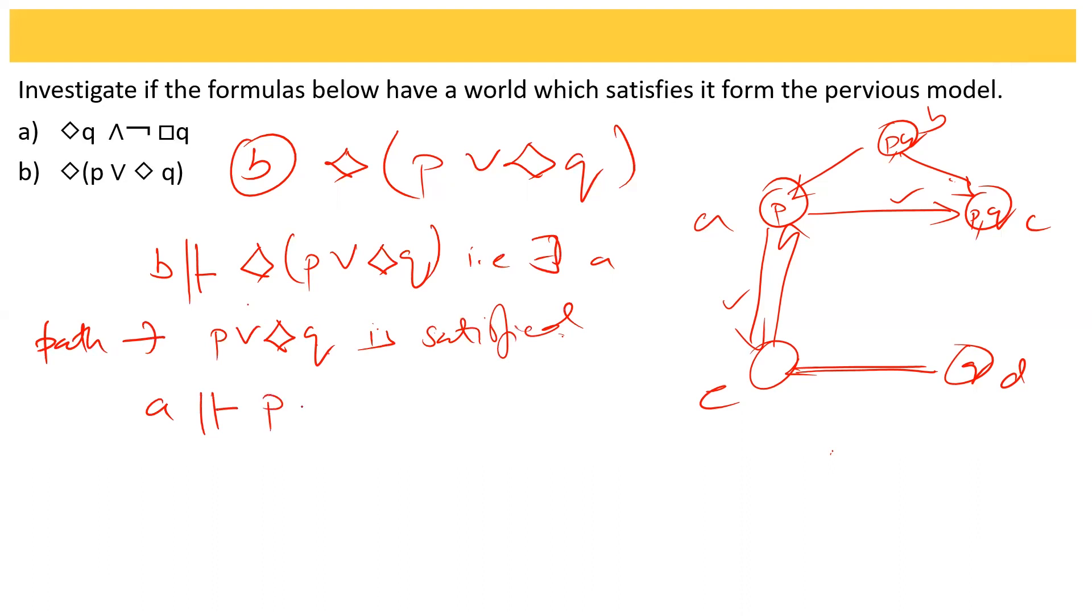A satisfies P or diamond Q. A satisfies P and the next step from P, which is the next step, is Q. So it satisfies both.